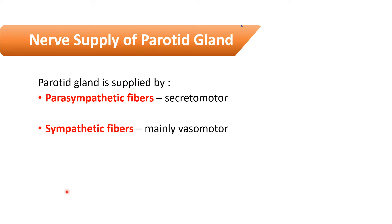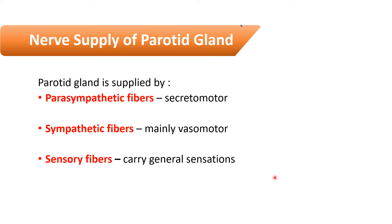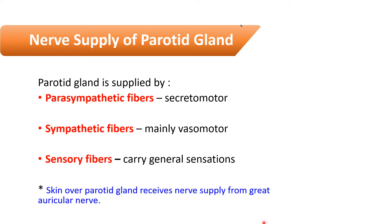The third type is sensory fibers, which carry general sensations like pain, touch, heat, and cold. Now, besides the parenchyma of the parotid gland, the skin over the parotid gland receives nerve supply from the great auricular nerve.